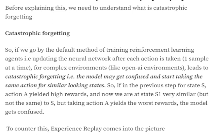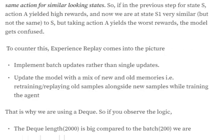In this case the model gets confused — should it take action a or not? Because we are updating the network after every single sample, the model is not able to train properly. This is where experience replay comes into the picture. Instead of single updates, we will be doing batch updates, so the zigzag manner of the loss should get reduced.